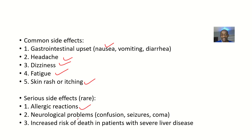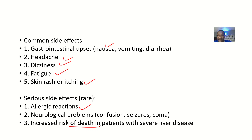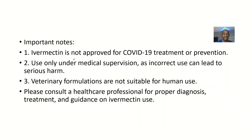Serious side effects include allergic reactions and neurological problems like confusion, seizures, or coma — though these usually occur with long-term use of the drug. There is also an increased risk of death in patients with severe liver disease, because the drug has to pass through the liver for first-pass effect. If you already have underlying liver disease, the first-pass effect is impaired, making the drug more toxic.